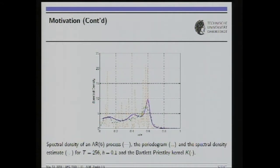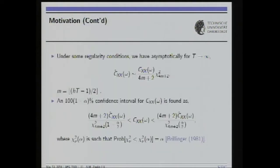Taking this estimator, the blue curve is the true spectrum, unknown. With 256 data points and bandwidth 0.1 for the Bartlett-Priestley kernel function, you get the periodogram in dotted red and the smoothed periodogram in green. The focus of my talk today is about accuracy measures such as confidence intervals.